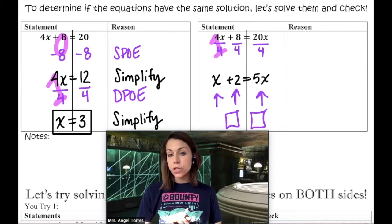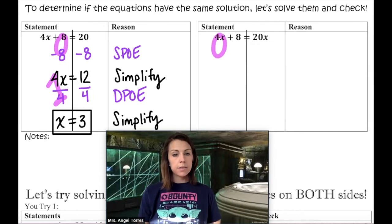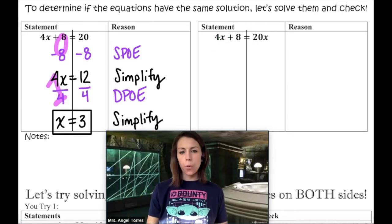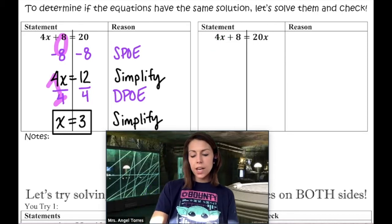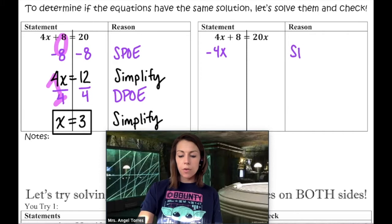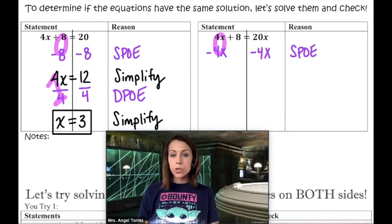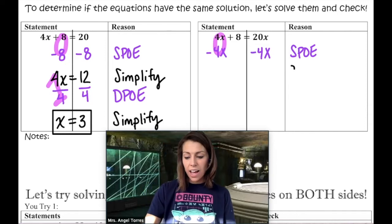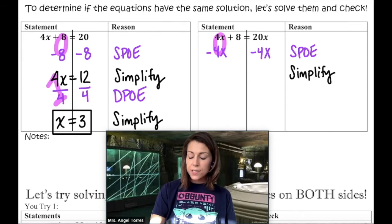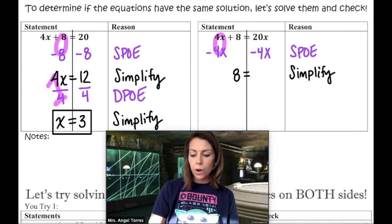There's one thing we haven't tried yet — what if we make a zero term out of 4x? To make zero out of a positive 4x, you subtract 4x. By the subtraction property of equality, I subtract 4x from both sides. Can I subtract 20x minus 4x? Yes, because those are like terms. So I simplify: the left side now only has my constant 8, and 20x minus 4x on the right is 16x.